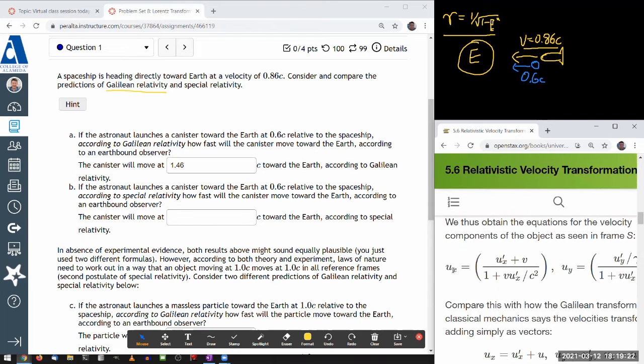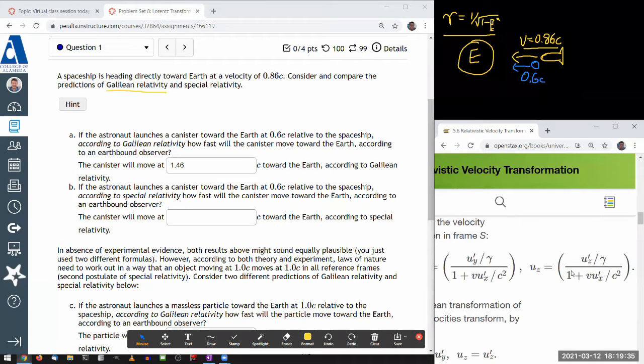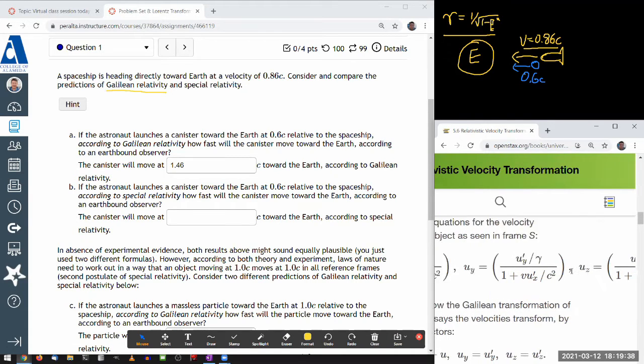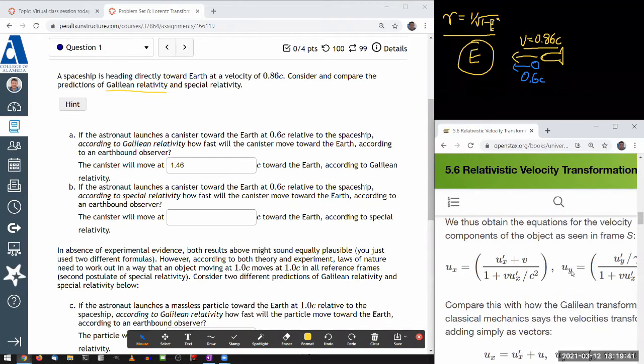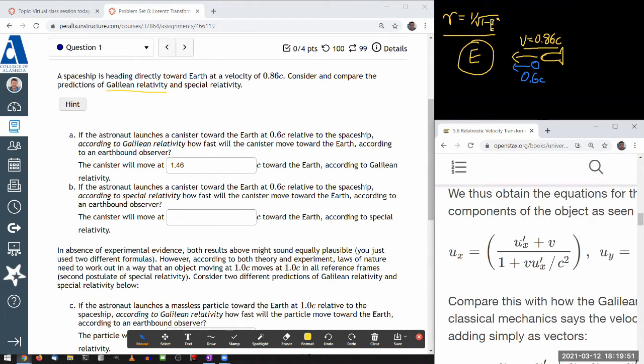So the X is the component that's parallel to the velocity of your reference frame. And most of the times we'll just be dealing with that. Y and Z are the components that are perpendicular. And I want you to know where the formula is, so that if ever a question asks you to do something with the perpendicular components of velocity, then you know where to find it. But otherwise, we'll just stick to this. And depending on how you order these primes and unprime quantities, there's a difference of sign here. This is either plus or minus.